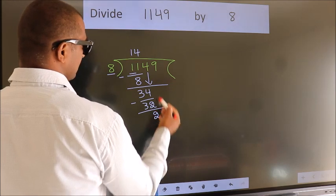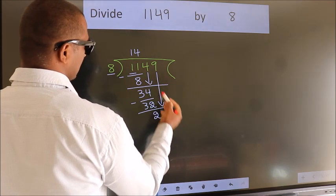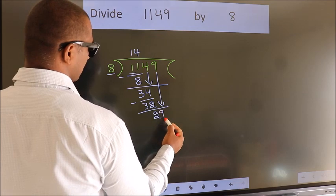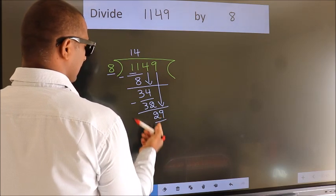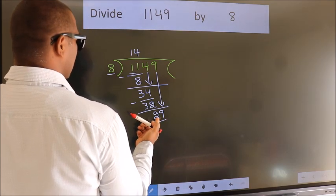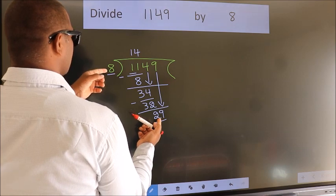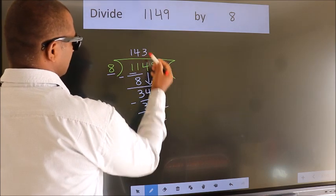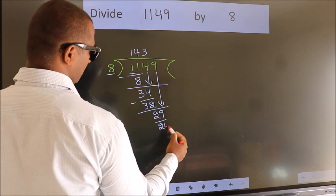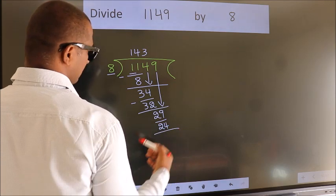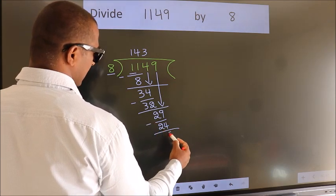After this, bring down the beside number. So, 9 down. So, 29. A number close to 29 in 8 table is 8 threes, 24. Now, we subtract. We get 5.